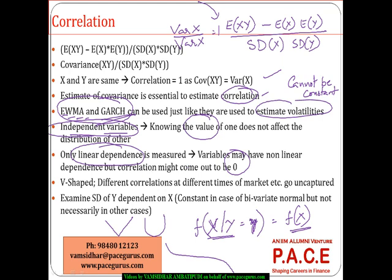That is where we talk about not just doing the standard correlation calculation. Probably I may have to estimate the standard deviation of Y dependent on X. We try to find the standard deviation of Y given X. If it is constant, I can look at it as a bivariate normal distribution; if it is not, it can lead to any other distributions as well. Understanding the relationship between variables is essential from this perspective.